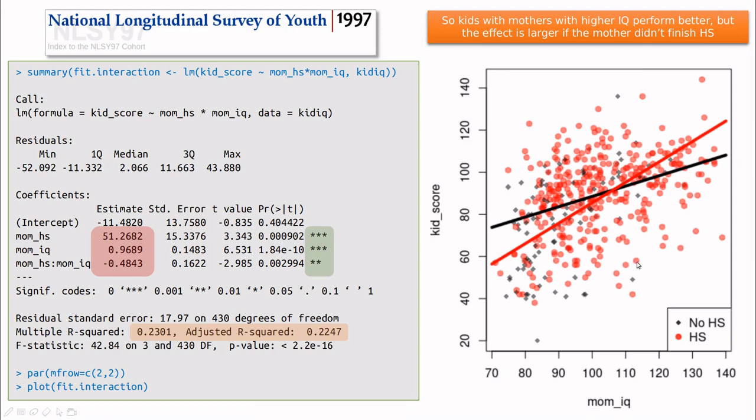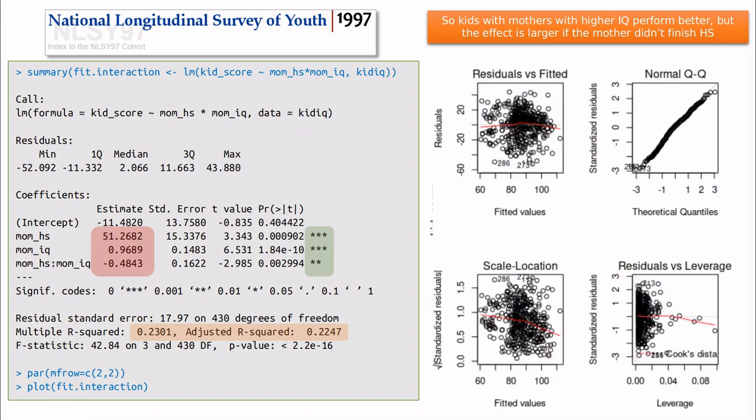Graphically you can see this - the intercept increases with mother finishing high school, but the slope is decreased. In the end, the mother IQ is more important than having finished high school. Let's take a look at the residuals and this looks pretty smooth. There are some discrepancies at the end, so this is not normal at the end, but this red line is almost horizontal.